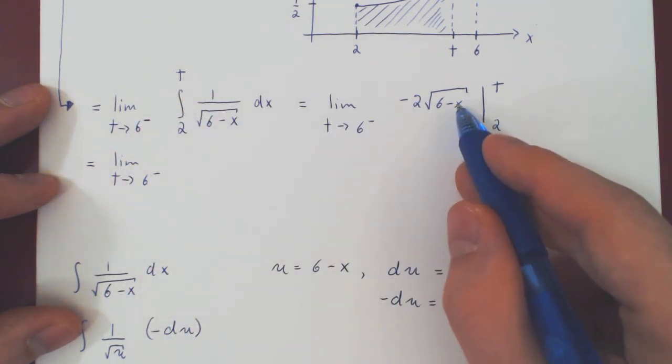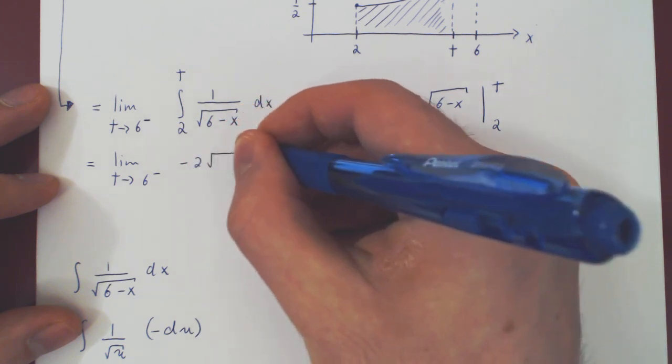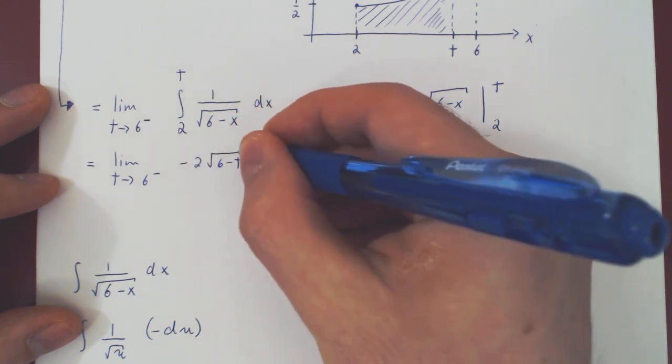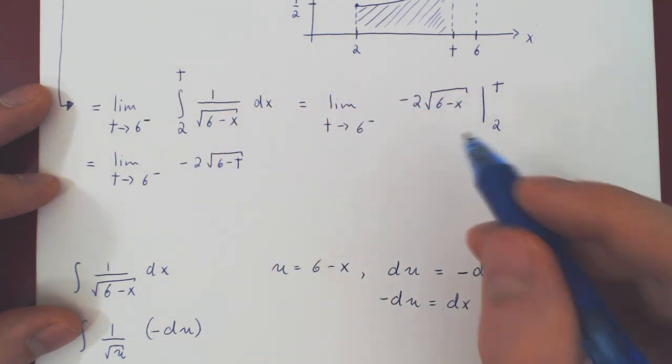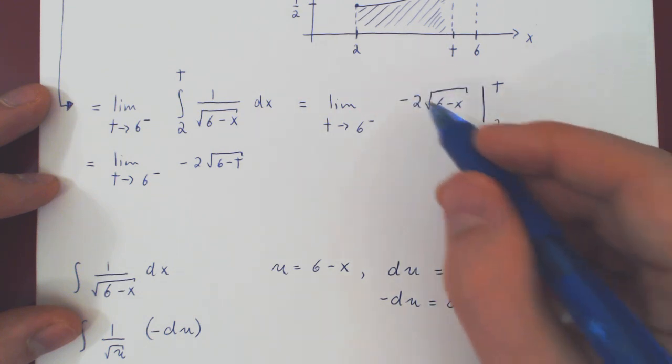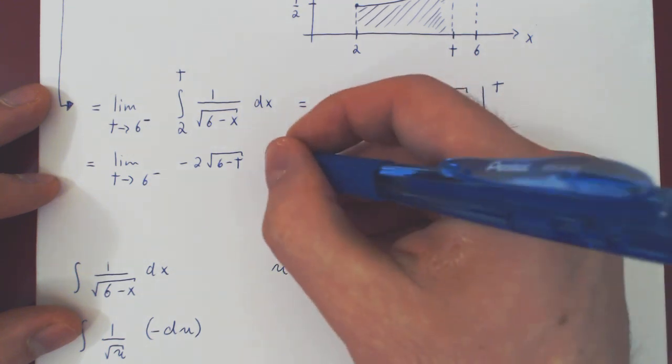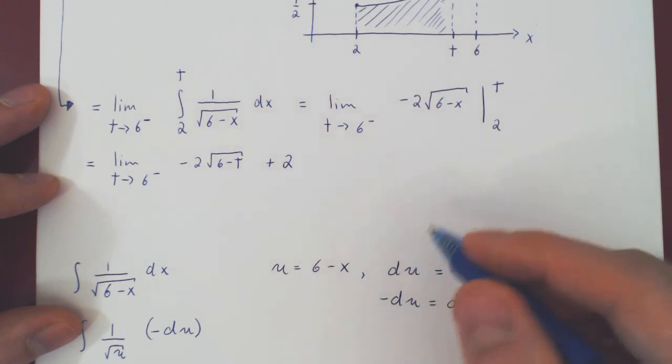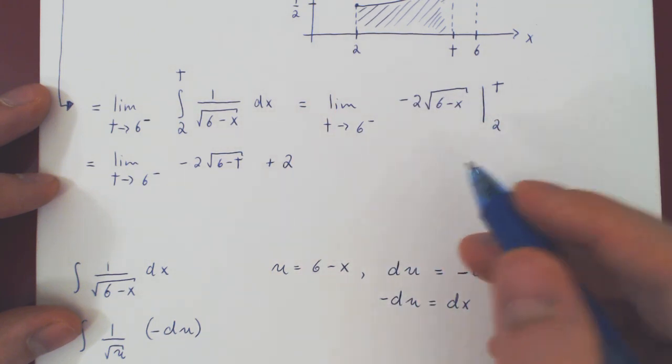So replacing x by t gives us negative 2, the root of 6 minus t, minus our antiderivative at 2, but minus minus is plus. So plus 2, the root of 6 minus 2.